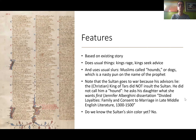Do we know the Sultan's skin color yet in this text? No. We're 420 lines in and we've got no idea. We get some references to costume differences and references to religious differences, but there's absolutely no commentary yet on skin color. I think that's very interesting.